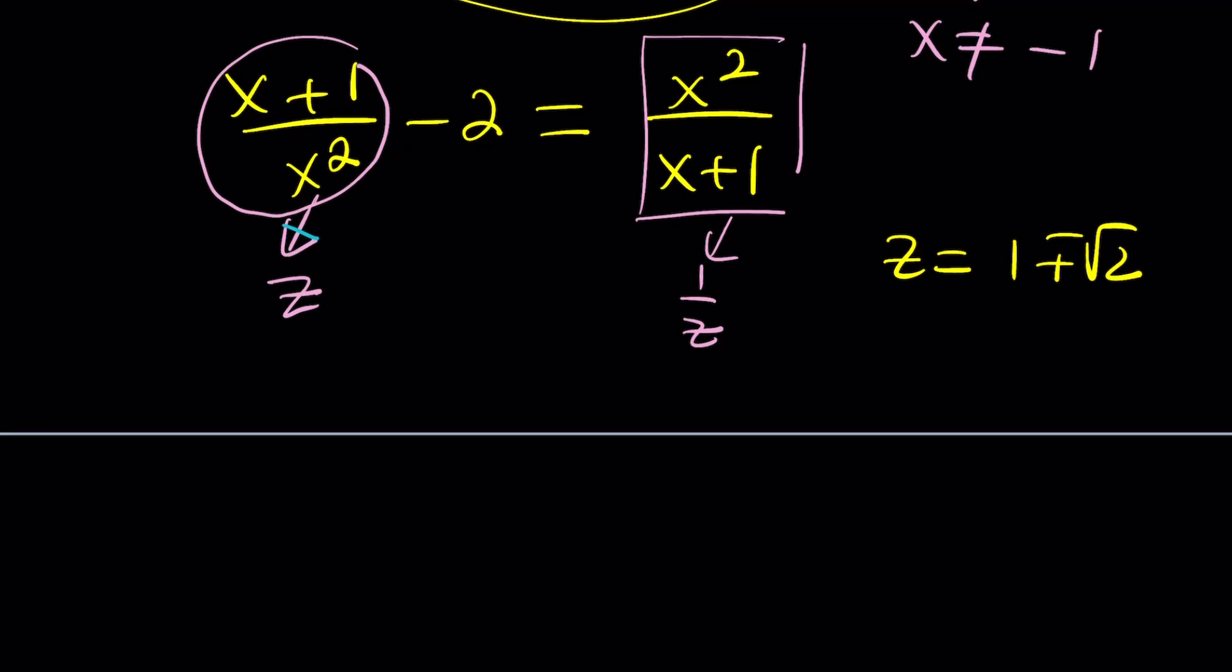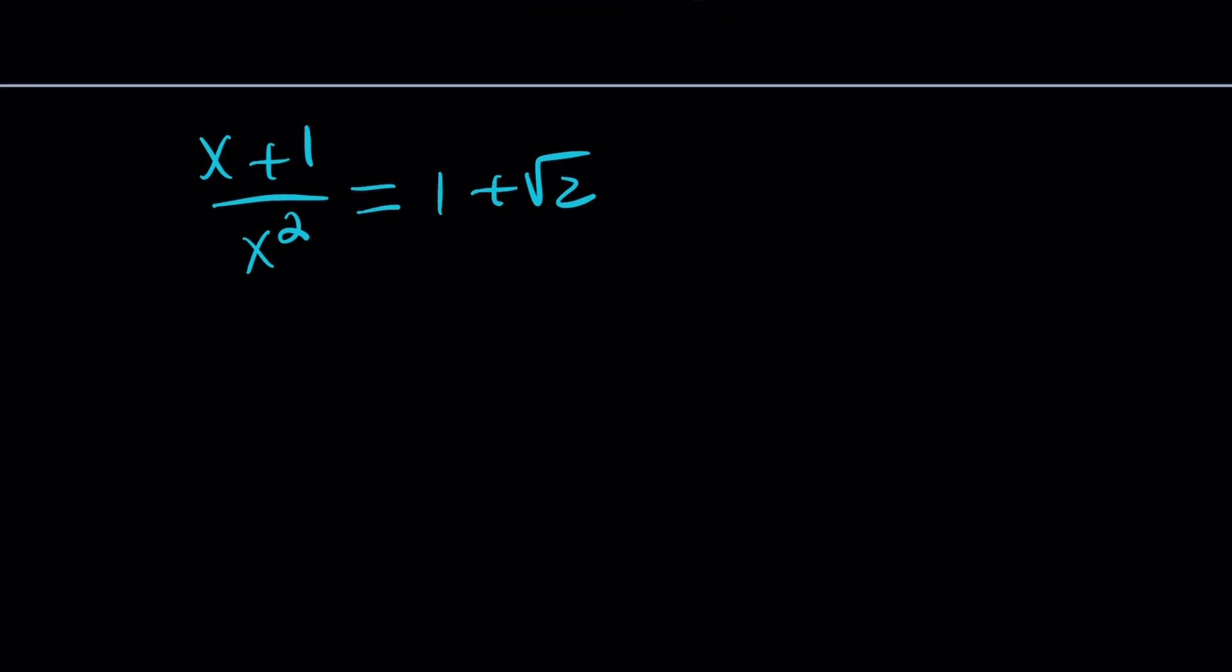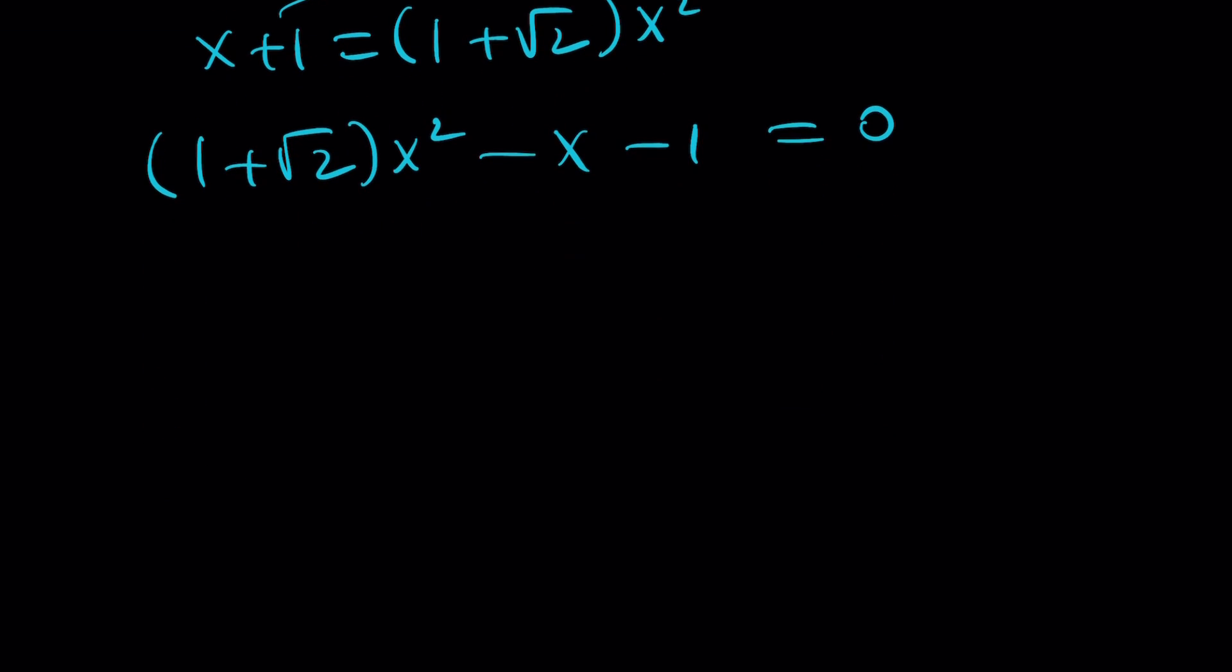So let's set this equal to one of the values of z. Let's start with this one. And now we're going to get x plus 1 equals 1 plus root 2 times x squared, which is the coefficient of x squared. Let's turn this into a full quadratic. And this quadratic we do know has real solutions because a and c have opposite signs. That's what happens when a quadratic equation has that property.